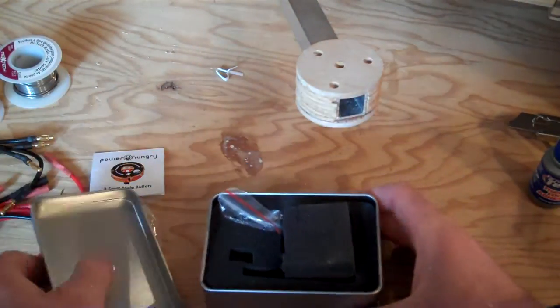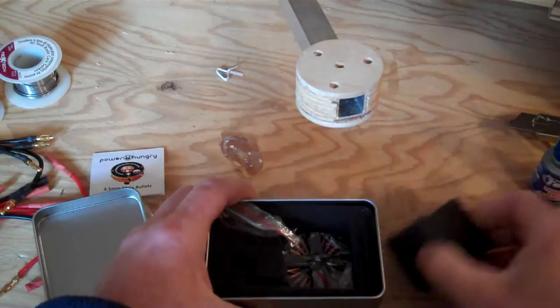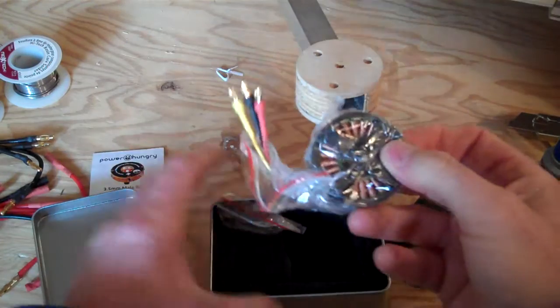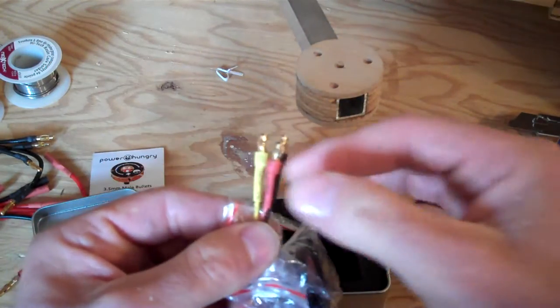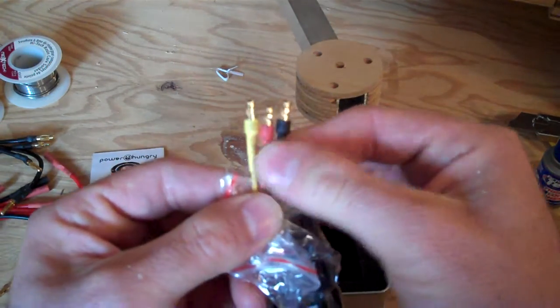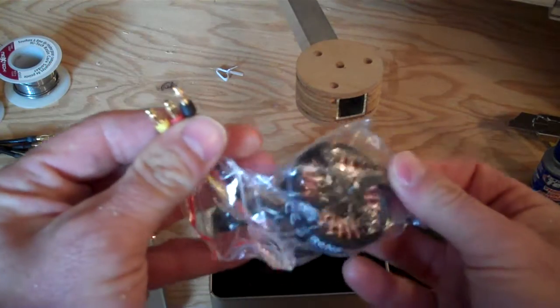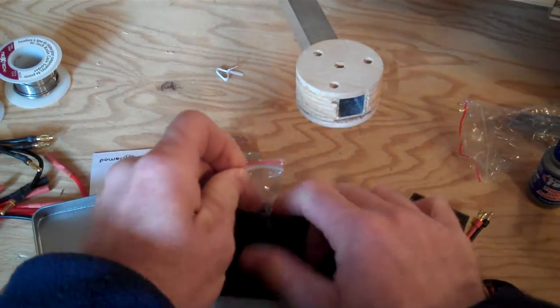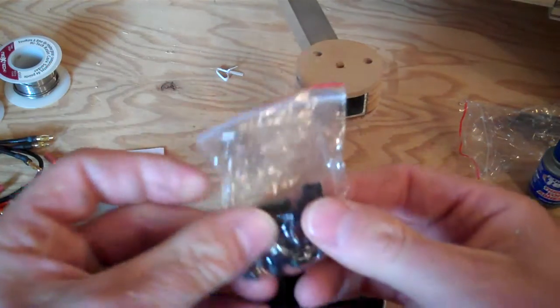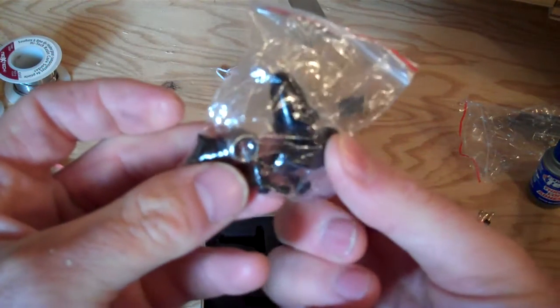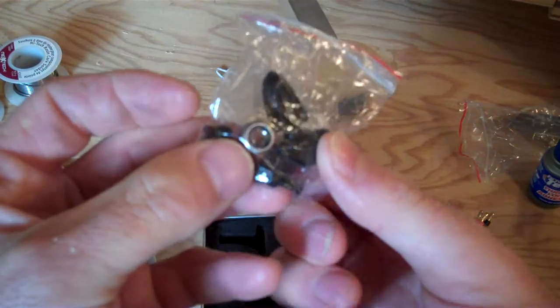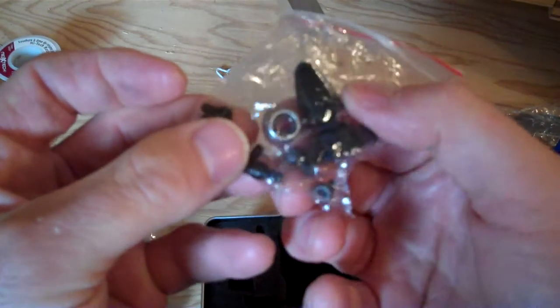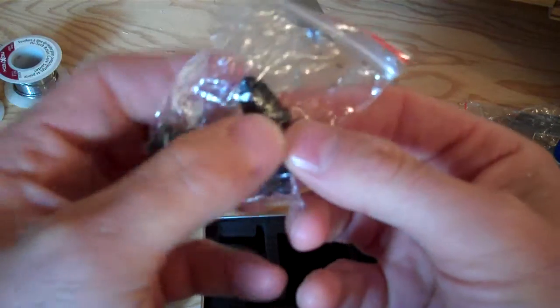Let's see what's inside here. The motor comes with 3.5 millimeter bullet connectors. You get a packet of screws, a prop adapter, plus a lock nut to keep the propeller on.